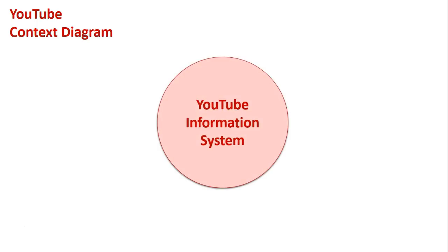The first one we're going to look at is a context diagram for YouTube. When starting any type of context diagram, the first thing you want is that one circle in the middle to represent the entire information system. In this case it's the YouTube information system - we're going to plant that right in the center. It's a single circle on its own and the only circle we'll be using in this diagram because it is a context diagram. The next step is to put up our external entities.